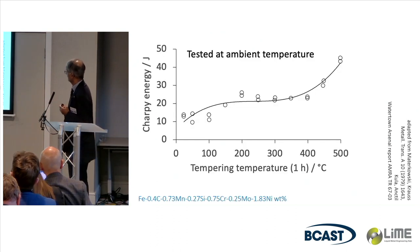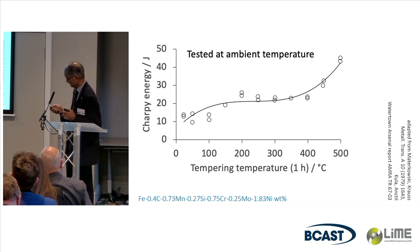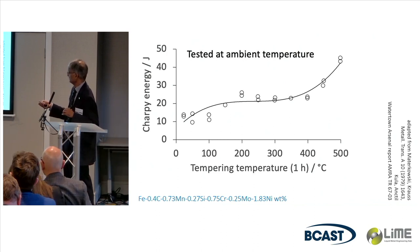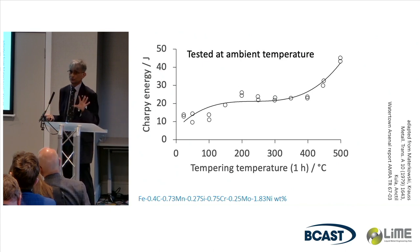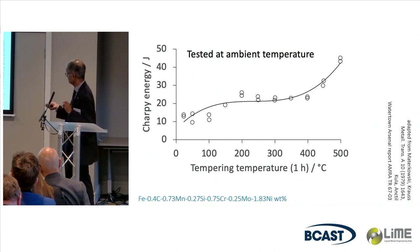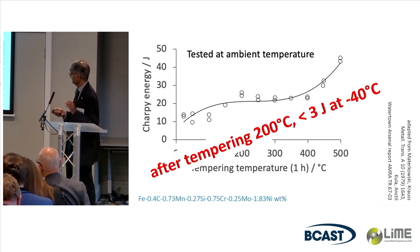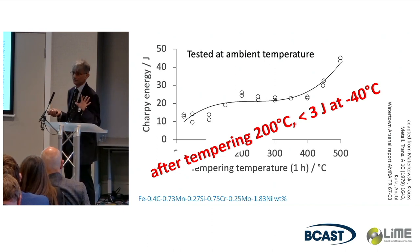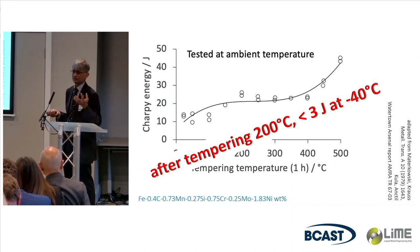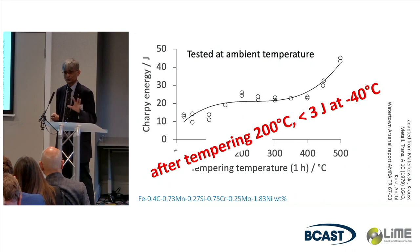Looking at the traditional information, we can measure toughness in many different ways — this is one method. If you don't temper the martensite, then at room temperature you have very poor toughness. This is just 10 joules of Charpy energy. Charpy is an empirical test, but I'll show you toughness tests later. The toughness is very poor without heat-treating the material. What we want is a good Charpy energy at sub-zero temperatures, because at room temperature 10 joules is not impressive, and at minus 40 degrees centigrade it's something like 3 joules with much scatter.